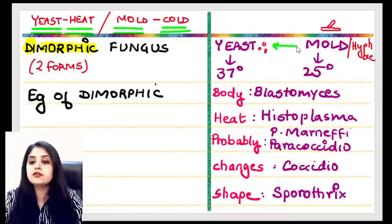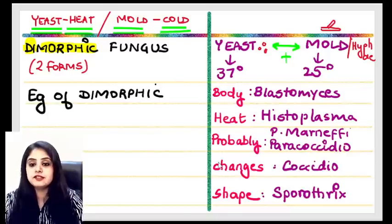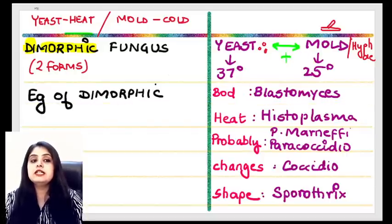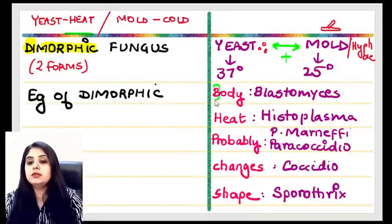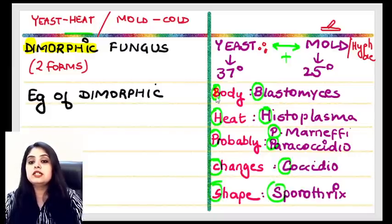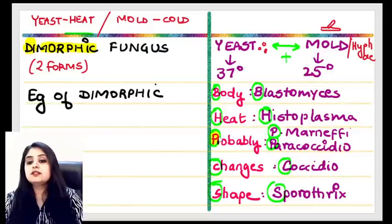Dimorphic fungi are famous for systemic involvement — organs are affected, with lungs most commonly involved. Starting with B for Blastomycosis, also known as North American blastomycosis, Gilchrist disease, and Chicago disease. It shows a figure-of-8 appearance because 'B looks like an 8,' and the key feature is broad-based budding.